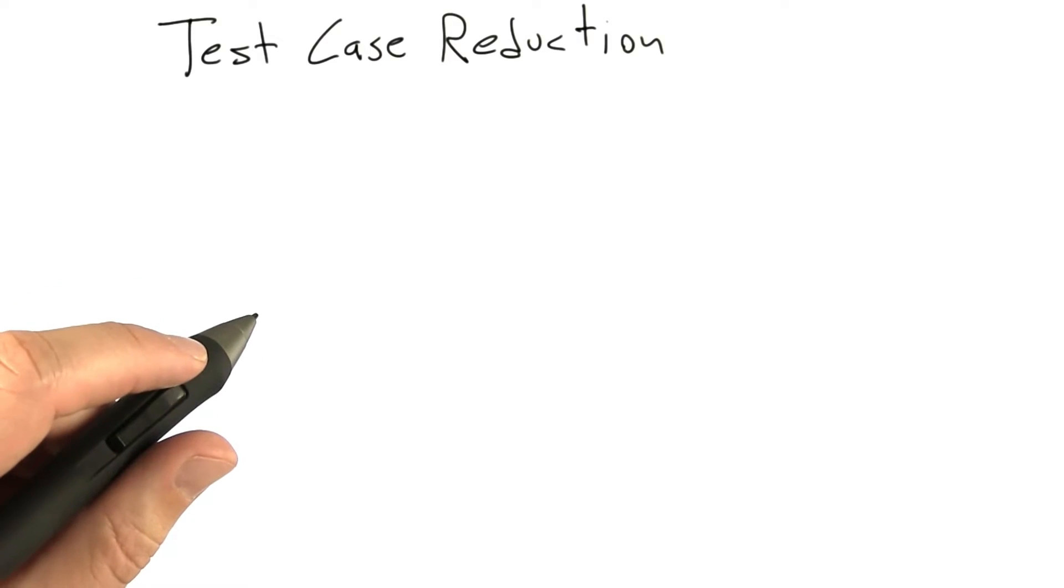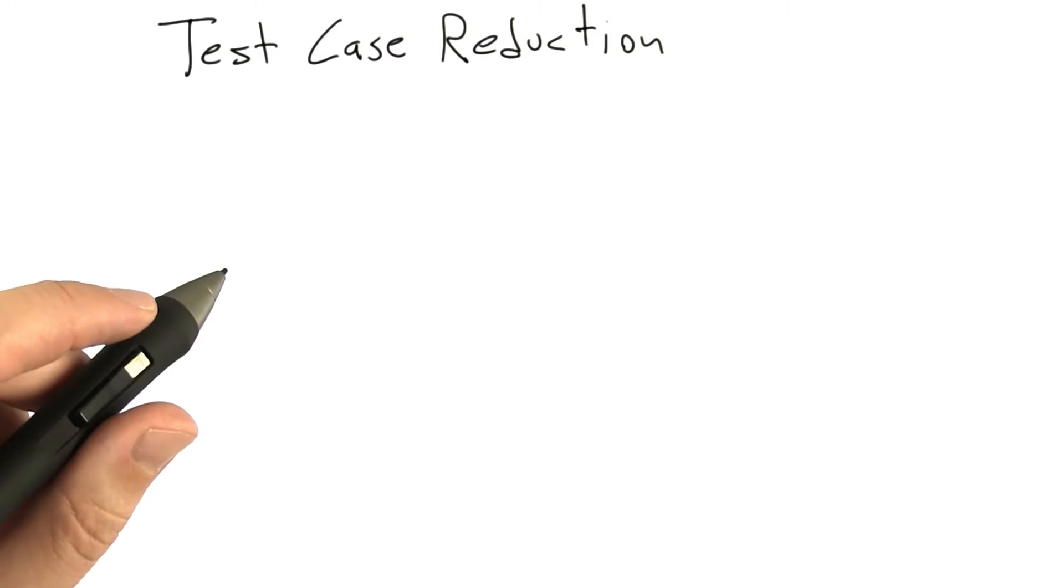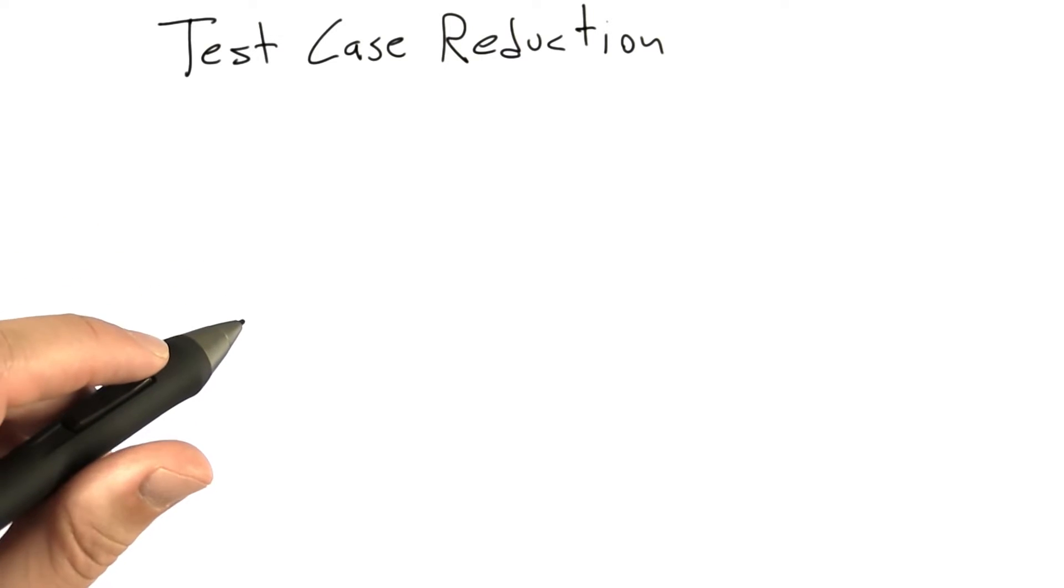So test case reduction is the process of taking some large input that triggers a failure and turning it into a small input. And it's usually the case that many bugs can be triggered by small inputs.